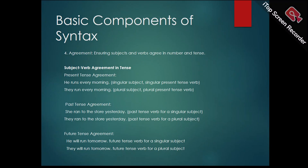Agreement: ensuring subjects and verbs agree in number and tense. Agreement in grammar refers to the correspondence between different parts of a sentence. The most common type is subject-verb agreement. Tense indicates when the action of the verb takes place — past, present, or future. The verb must reflect the correct tense and remain consistent. For example: 'He runs every morning' (singular); 'They run every morning' (plural); 'She ran to the store yesterday' (past); 'He will run tomorrow' (future).